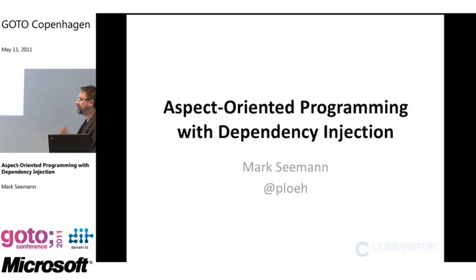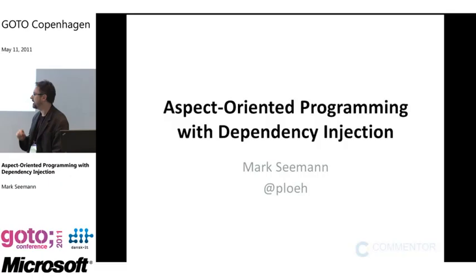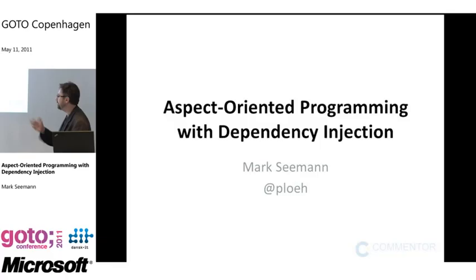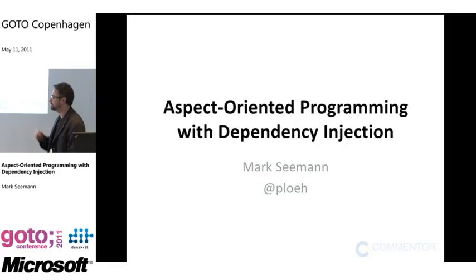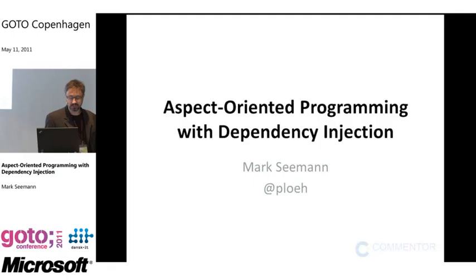I'm going to talk about what aspect-oriented programming is and how it relates to dependency injection, and I want to do this with lots of code examples. I'll write code as we go along between the slides. The coding may be a little slow at the beginning just to establish context, but it'll speed up as we go along.